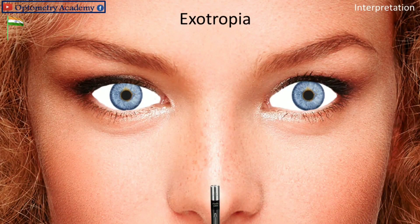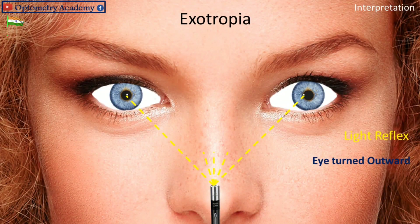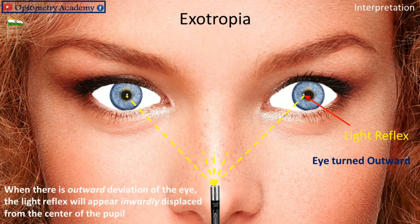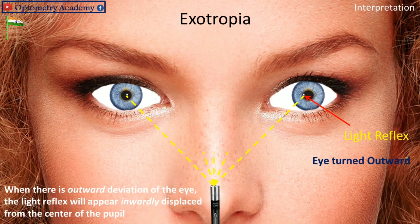Exotropia — eye turned outward: When there is outward deviation of the eye, the light reflex will appear inwardly displaced from the center of the pupil.